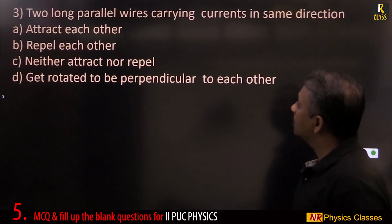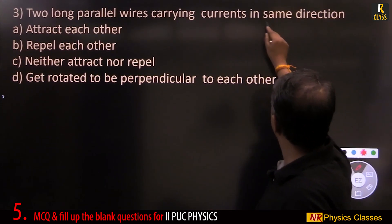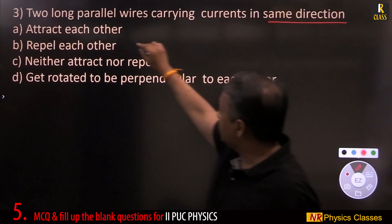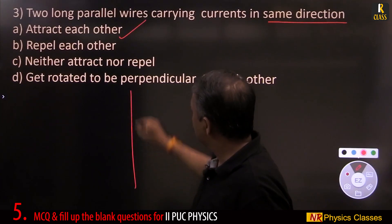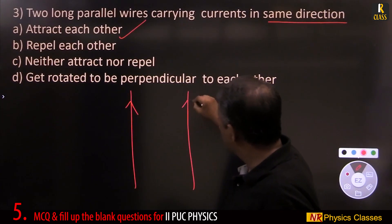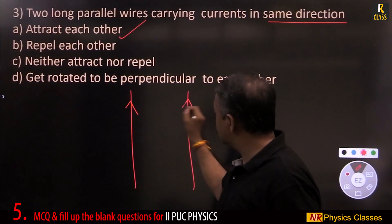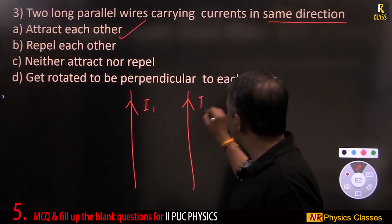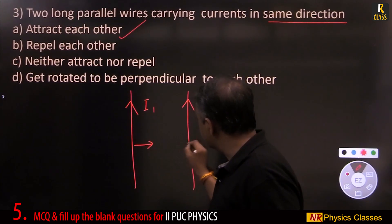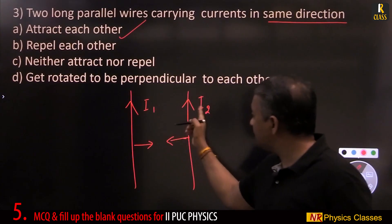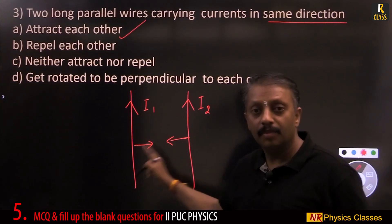Two long parallel wires carrying currents in the same direction attract each other, isn't it? This is the diagram, two long straight parallel conductors. Because of same direction, I1, I2, there is attraction.